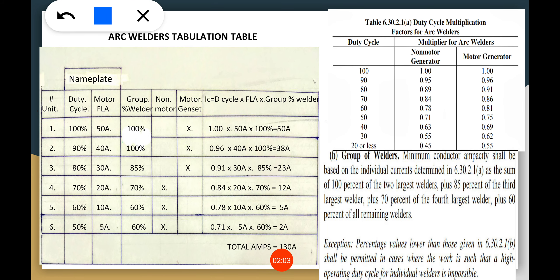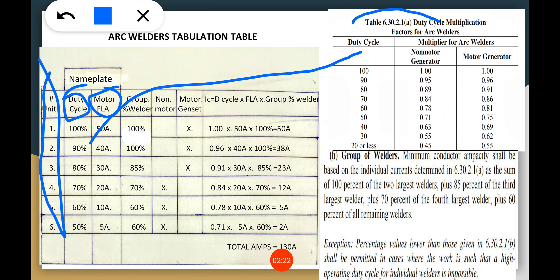We have the arc welder's tabulation table. We have 6 units here. On the nameplate we have the duty cycle and the motor FLA. The duty cycles will be referenced to Table 630.21A. The motor FLA — whoever has the largest FLA on the nameplate — that is the largest motor we define in this table.